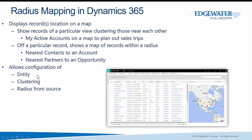In our solution it is of course configurable — for entity, for clustering (do you want records to cluster within 50 miles or 100 miles?), and for the radius from the source.